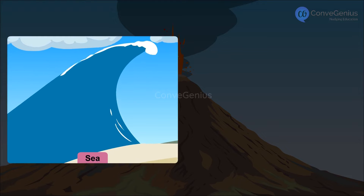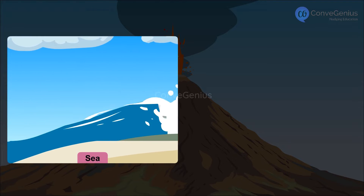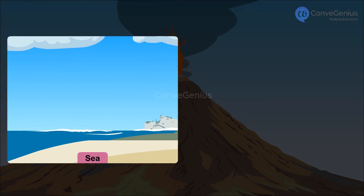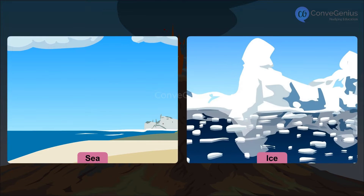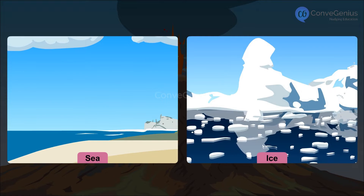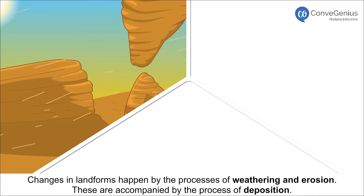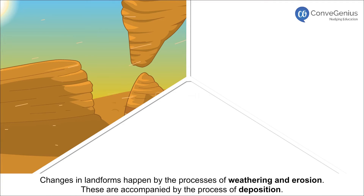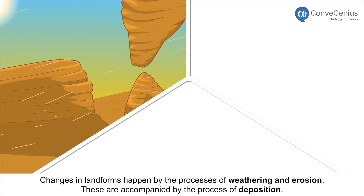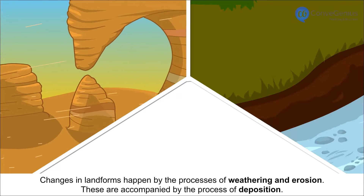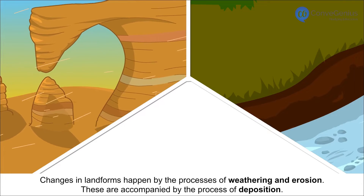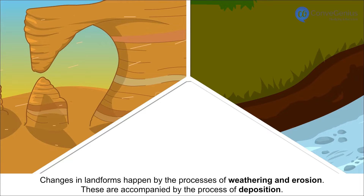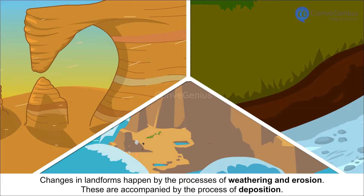Exogenic forces cause changes due to flow of the sea, water, and ice. Also, by flowing wind, changes in landforms happen by the processes of weathering and erosion. These are accompanied by the process of deposition.